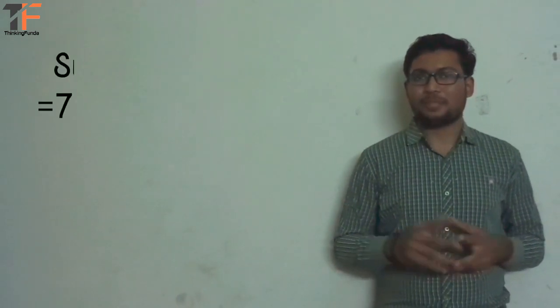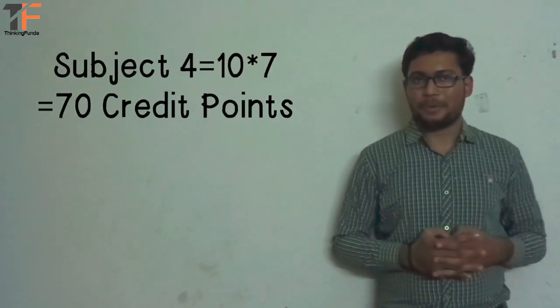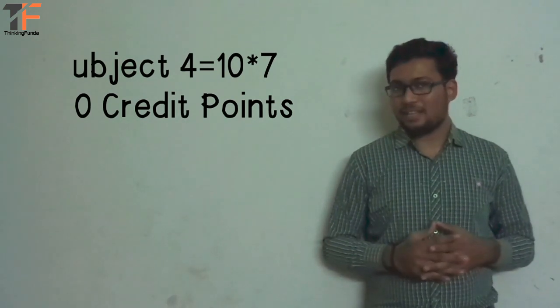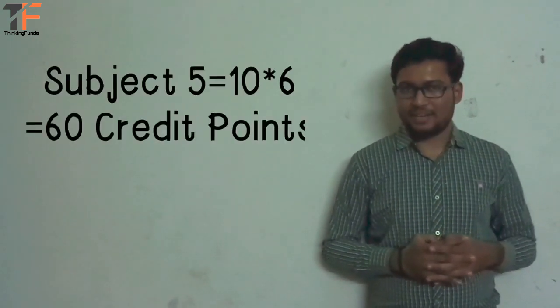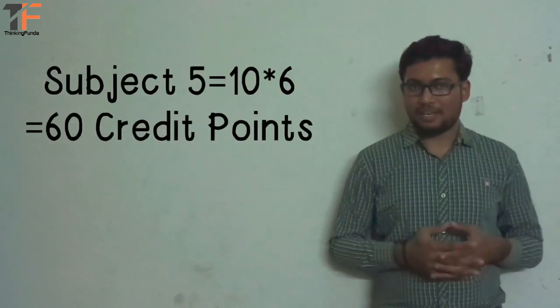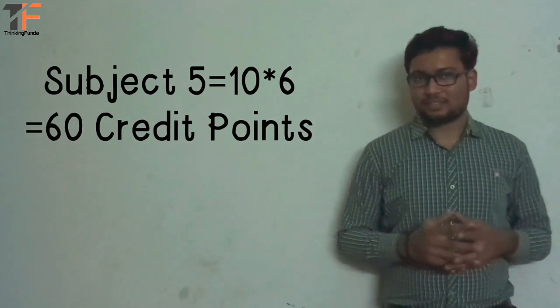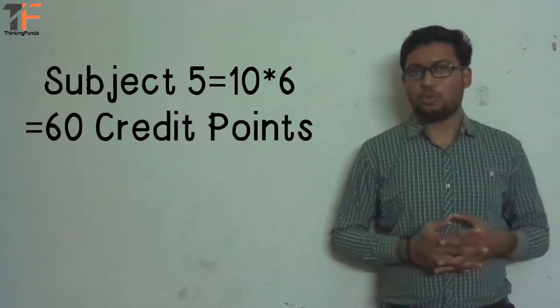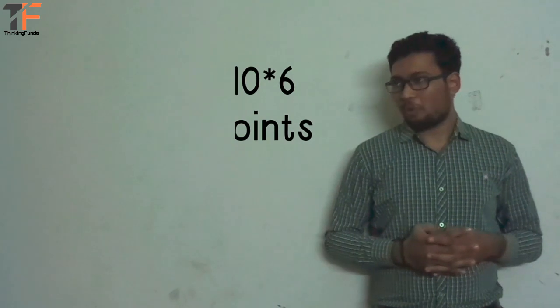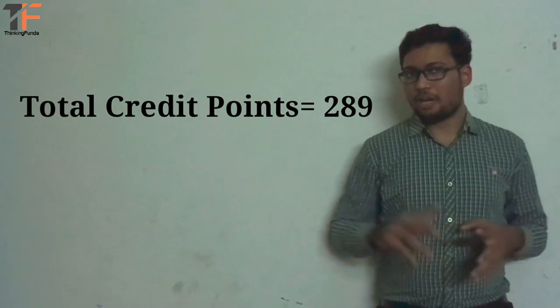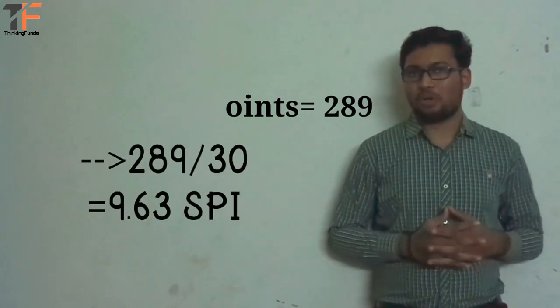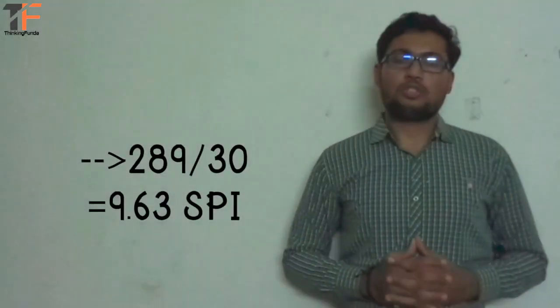For subject 4, the subject credit is 7 and you obtain 10 grade points, equals 70 credit points. And for subject 5, 10 grade points for AA multiplied by 6 credits equals 60 credit points. So the total credit points you obtain is 289. Now you have to divide 289 credit points by 30, so finally you will get 9.63 SPI.